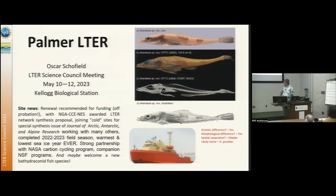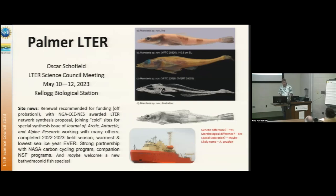We've heard about some of the other synthesis efforts. I'm going to talk about our disturbance highlights. It was the lowest sea ice year ever recorded for the Antarctic. Long partnerships with NASA are going well. We think we've found a new species of fish, and we've applied to name it after the Gould — a ship we've been using for 20 years that's being put out of service — as our farewell tribute.